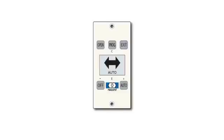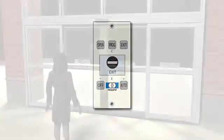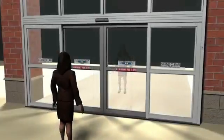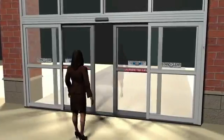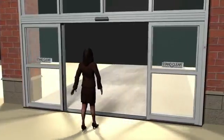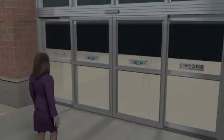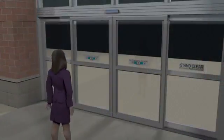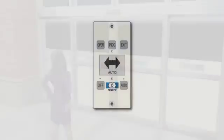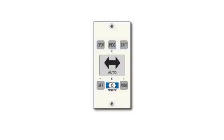Trained service personnel can properly diagnose and repair the Record 5100 series door. At closing time, the door may be placed in Exit Only mode. This mode provides one-way operation that will allow exiting customers to leave freely without allowing the door to open for entering customers. At the close of business, turning the door off is as simple as pressing the off button and securing the door with a manual lock.